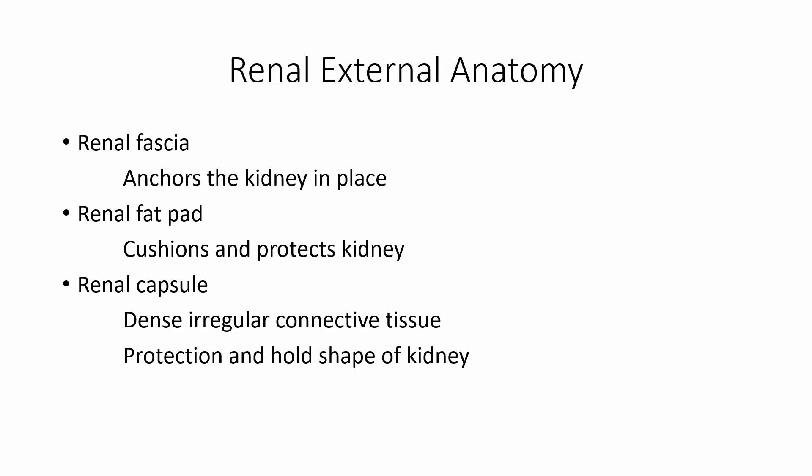So let's talk about the external anatomy for the kidneys. We have the fascia, the fat pad, and the capsule — and you'll notice we put 'renal' in front of each. If you see renal, you should be thinking kidney — like renal failure. So we have the renal fascia, which is going to basically anchor and hold those kidneys in place. The fat pad will cushion and protect the kidney — hence fat pad, it's padding, it's cushioning. And then the capsule, which is a dense irregular connective tissue all the way around the kidney that's going to help protect it and hold its shape.